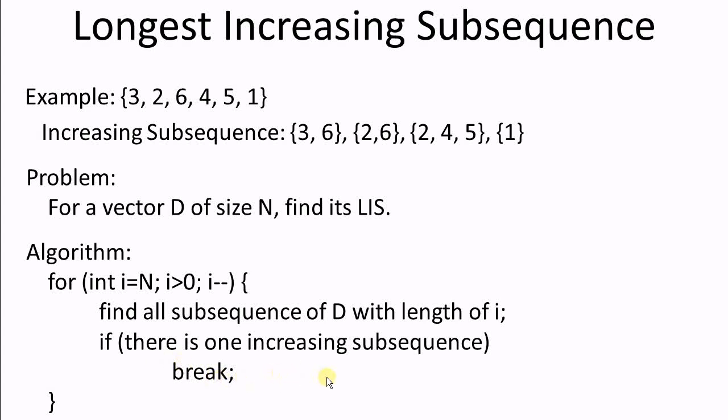This algorithm is simple and it should work. But the problem is, how complex is this? Let's consider how many subsequence does d have with the length of i. The answer is this formula. So the worst case complexity of this for loop is a summation of this formula with all i. So we get this. For i equal to n to 1, then sum up every value of this formula. And I trust you have learned from your math class, this is exponential in n. So the complexity of this algorithm is not acceptable. We have to find a better algorithm.